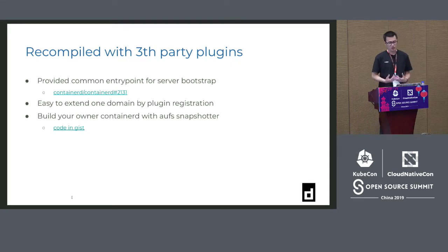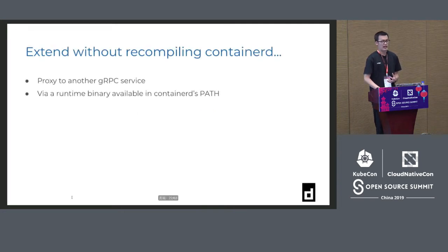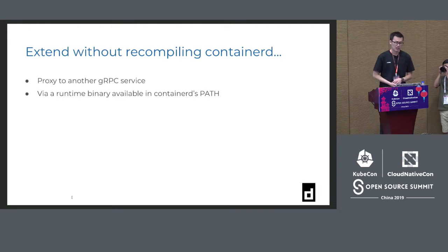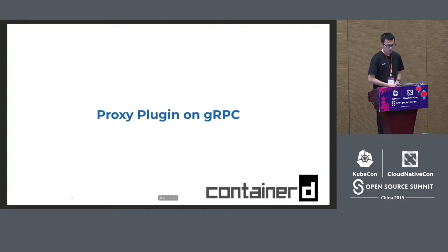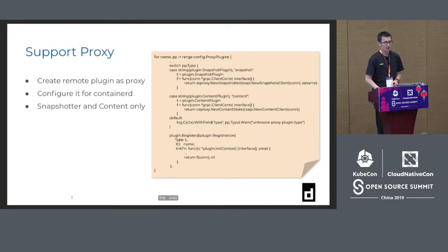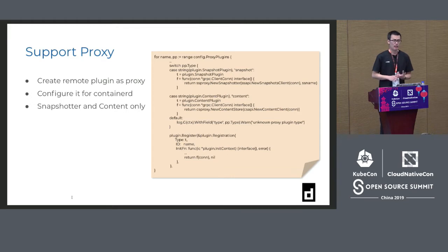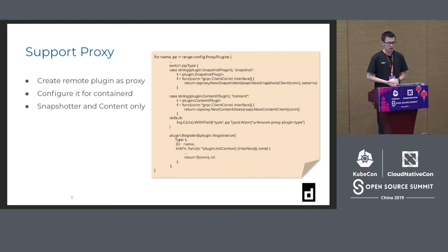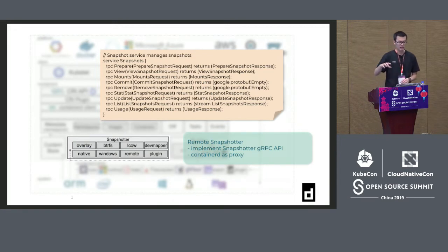Very quickly you can connect with third parties, but it may be more troublesome. So the second method is the external plugin — it's an open-source method. You don't need to do orchestration and we support two plugin types. One is the proxy plugin. Currently only Snapshotter and the content service are supported — it's a forwarding service.